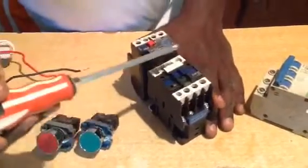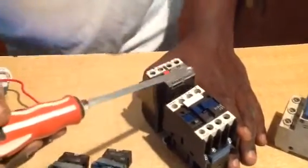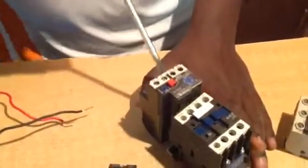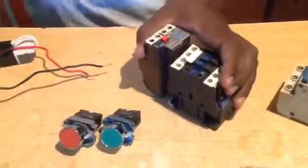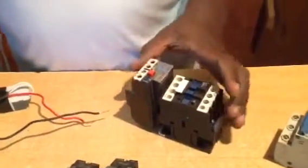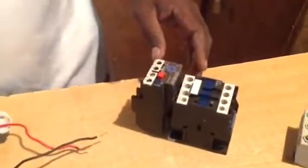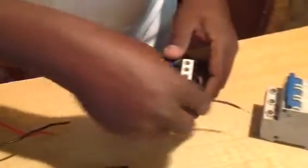Live 1 goes through T1 and then through the overload, then it comes down here to T1. Live 2 like that and live 3 like that. Since we are connecting it to single phase, first we will connect our neutral.